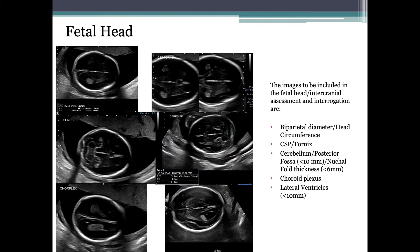Now moving into the fetal evaluation. For today's presentation we'll start at the top and work down in a logical order, recognizing that in real life this is a dynamic scan requiring flexibility based on fetal position. We'll start with the fetal head. The images to be included in the fetal head and intracranial assessment are the biparietal diameter and head circumference, CSP and fornix, cerebellum/posterior fossa/nuchal fold thickness view, the choroid plexus view, and the lateral ventricle view.